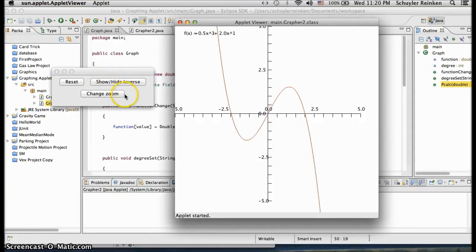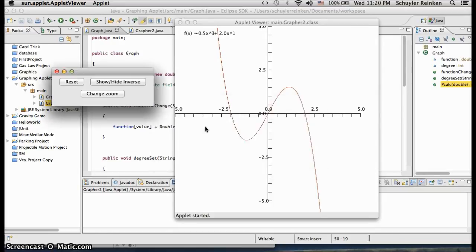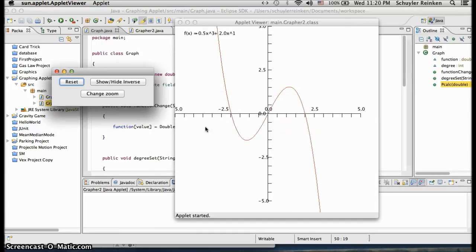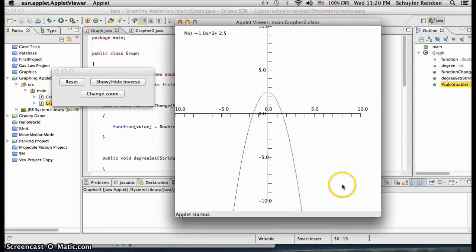Now, physics and other science classes also use graphs like this, but they would use ones more like this one. Give me a second here. And now, we have a parabola, and what this is, is the perfect projection of a flight path of an object through the air.